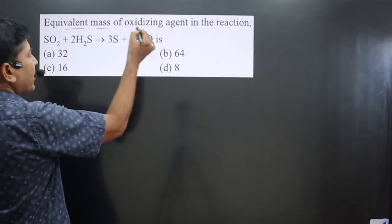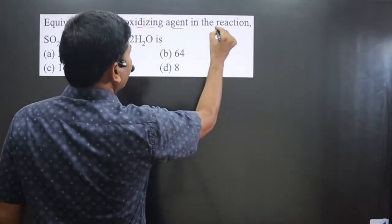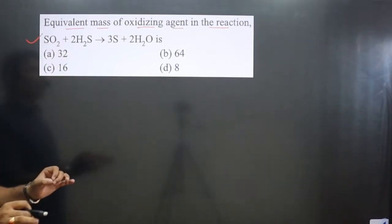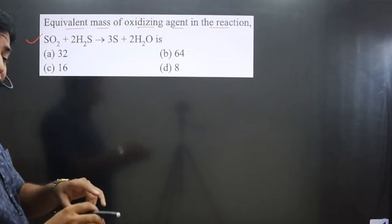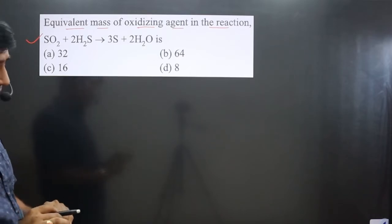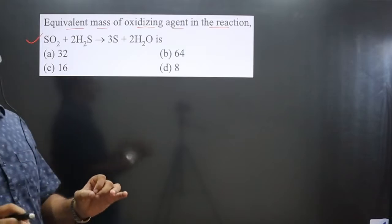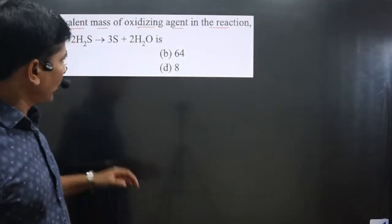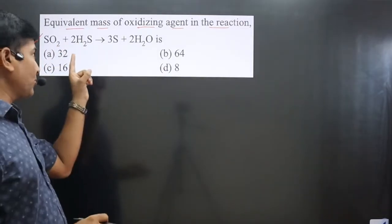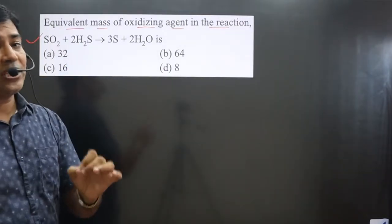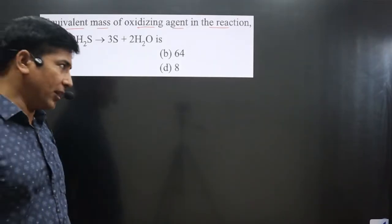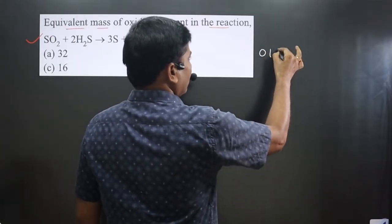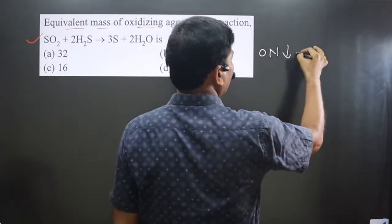The question asks for the equivalent mass of the oxidizing agent in a given chemical reaction. First, we need to identify the oxidizing agent. Oxidizing agents are substances that oxidize others and get reduced themselves. So any substance on the reactant side that is undergoing a reduction reaction will be acting as the oxidizing agent. Reduction reaction involves a decrease in oxidation number.